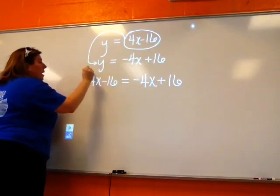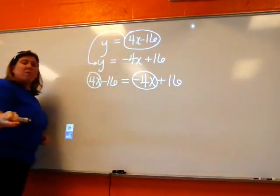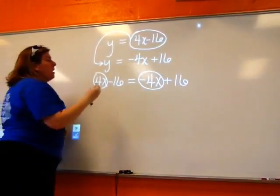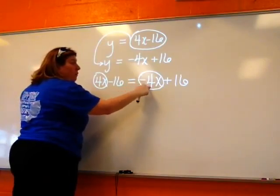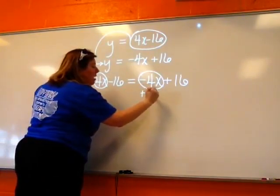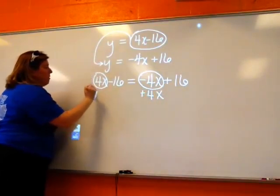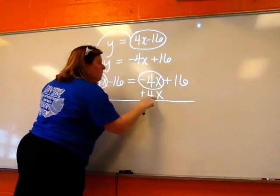Alright, so here are my X's. Here's a 4X, here's a negative 4X and I want those to be together on the same side. Most of us like for our X to come over onto the left-hand side so I'm going to move this negative 4X. To move a negative 4X, I'm going to add 4X to both sides. Take the X with you when you go.